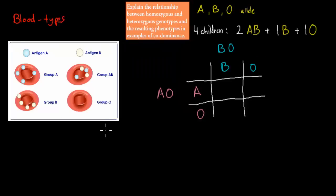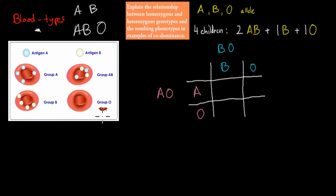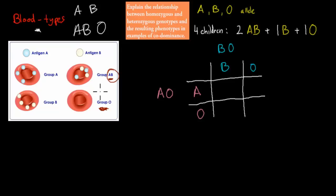A more interesting example has to do with blood types. Humans have four different possible blood types: group A, B, AB, and O. It's important to know because if you're group O, that means you can take no one's blood — if you take anyone else's blood you will more or less die or get severely ill — but you can give your blood to everyone. Whereas if you're AB, you can take blood from everyone, but you can only give it to other AB individuals.